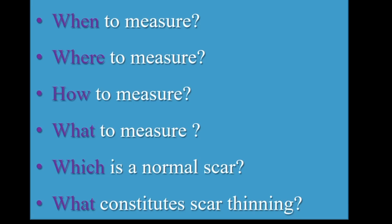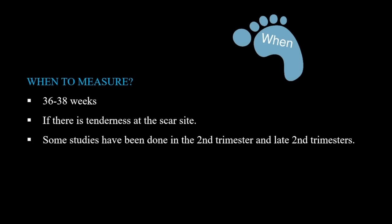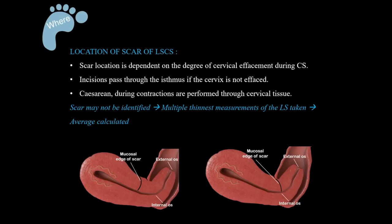The key questions to answer are: when, where, how, and what to measure, and what constitutes a normal scar versus scar thinning or rupture. Ideally, measurement should be done in the third trimester, around 36 to 38 weeks. However, if a patient presents earlier with scar tenderness or pain, assessment is needed immediately. Studies are also ongoing evaluating second trimester scar thickness assessment to predict later scar dehiscence. The scar location depends largely on the degree of cervical effacement at the time of the previous cesarean section.